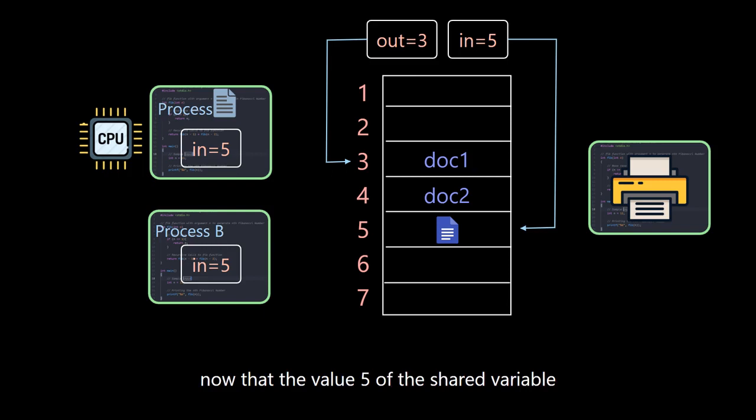Now that the value 5 of the shared variable in has been read, then according to position 5, position 5 is also written. This results in document B being erased before it was printed.